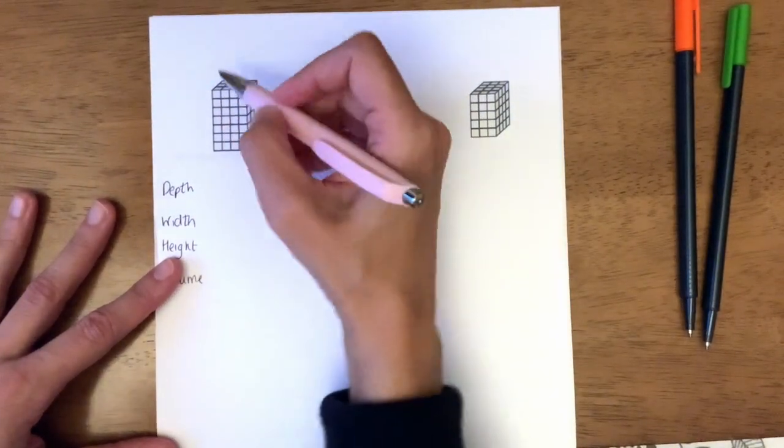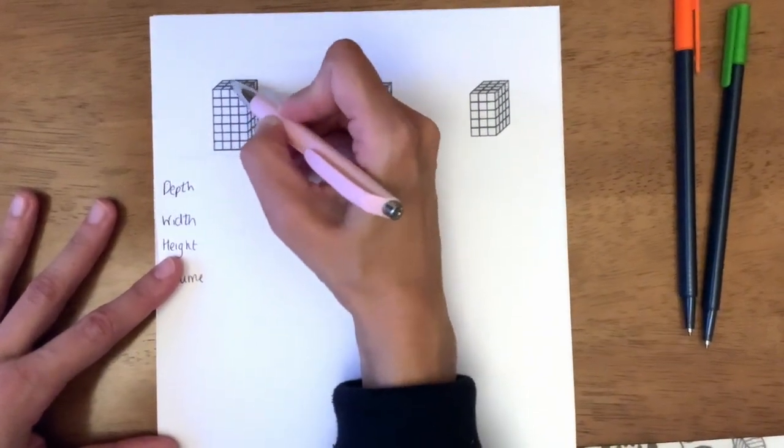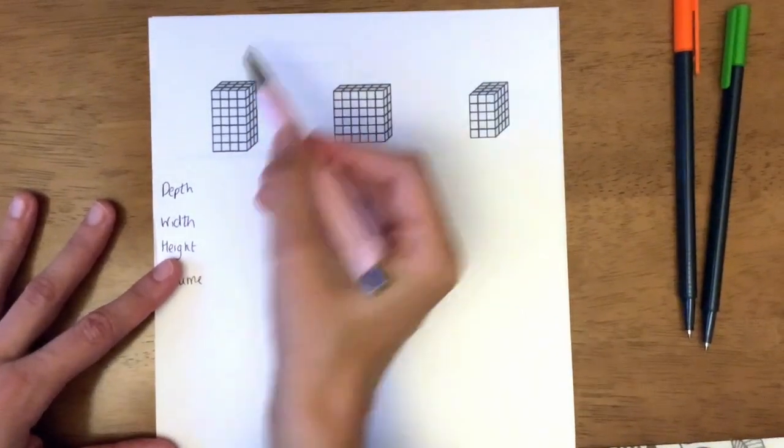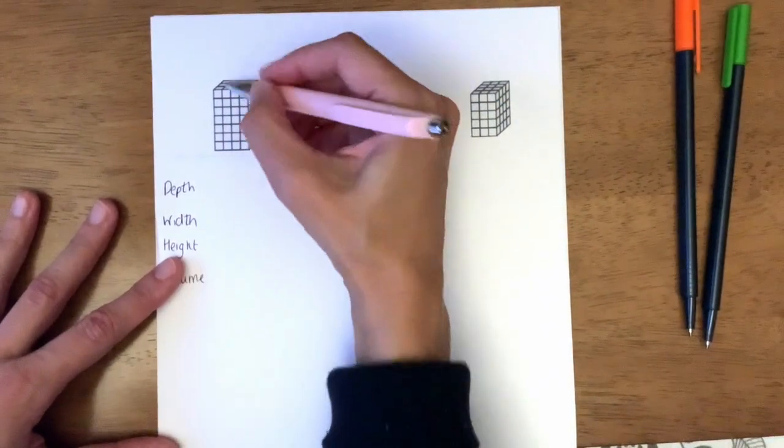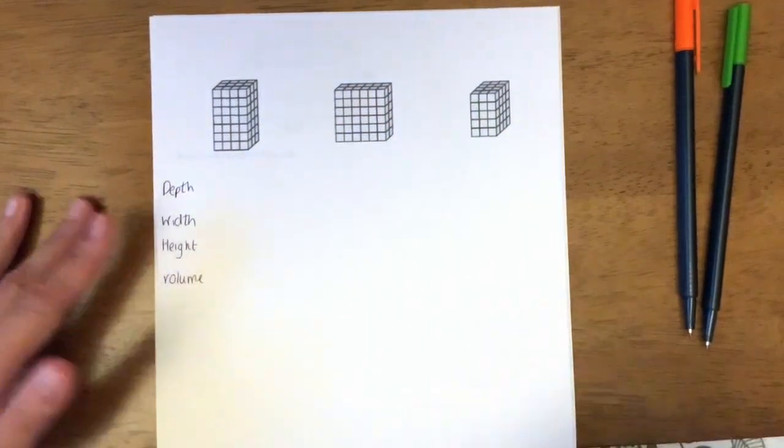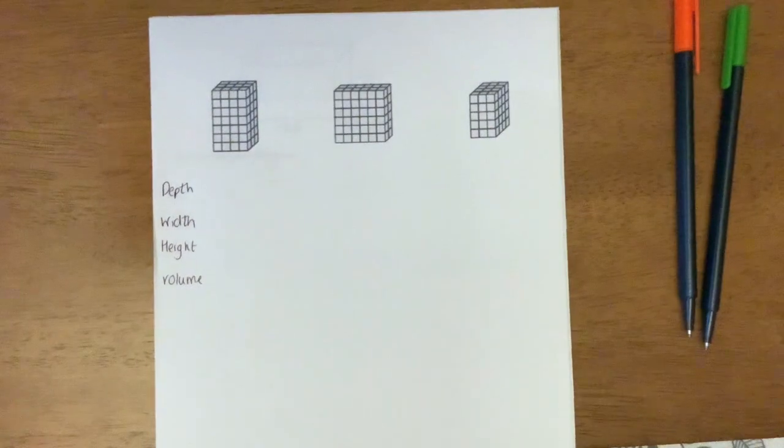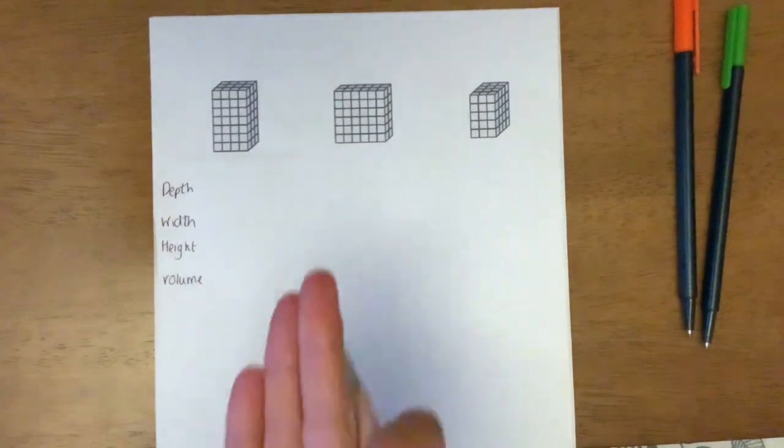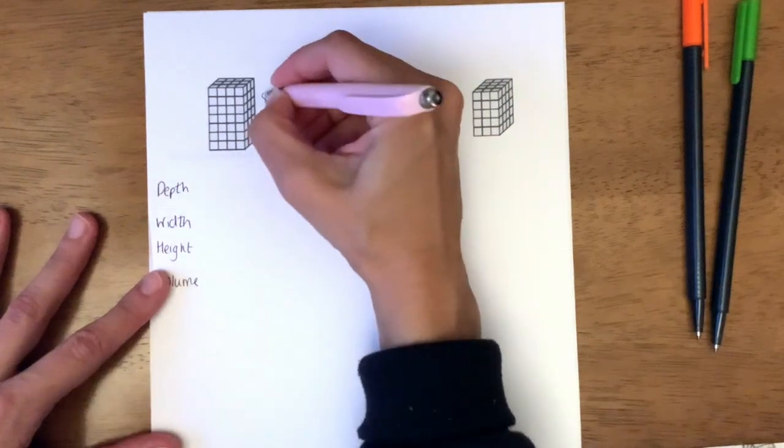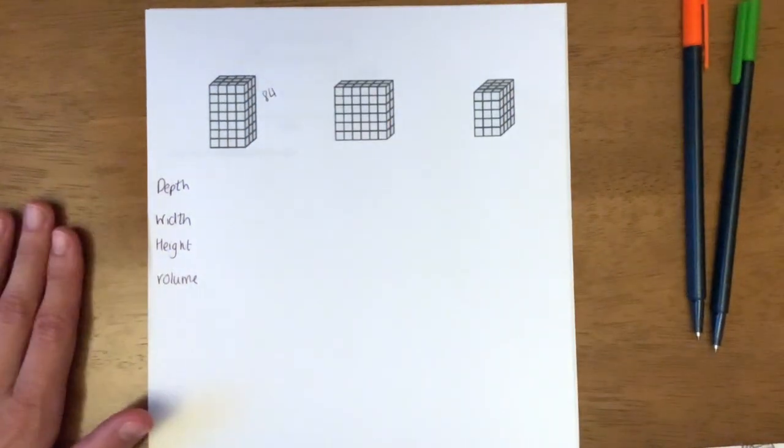To find the volume, that's what you do. So it's 1, 2, 3, 4, 5, 6, 7, 8, 9, 10, 11, 12 - so 12 on each layer. There are 1, 2, 3, 4, 5, 6, 7 layers. So it's 12 by 7, which is 84. The answer to this one would be 84 because there would be 84 cubes in that shape.